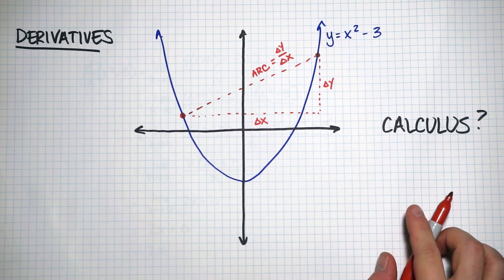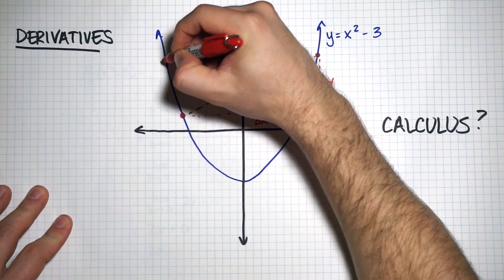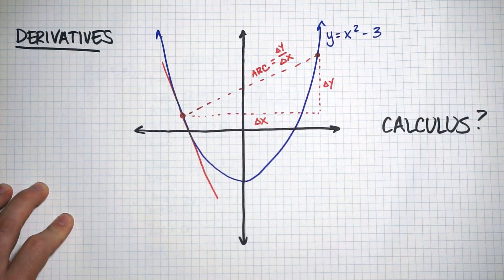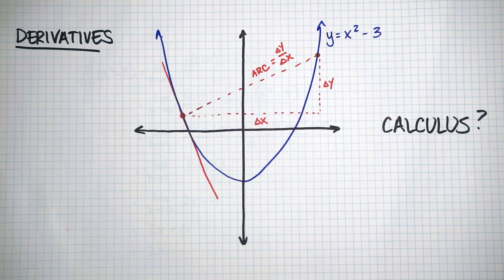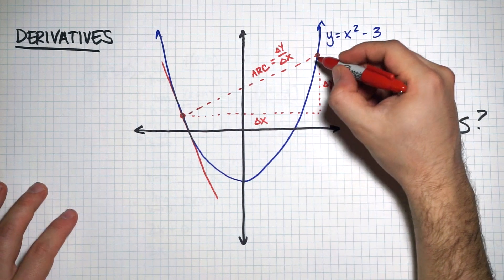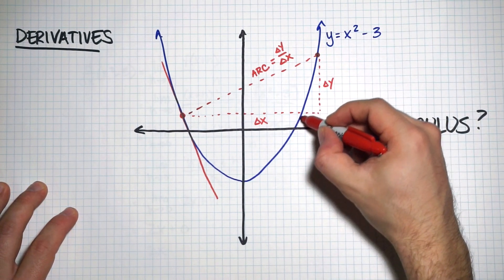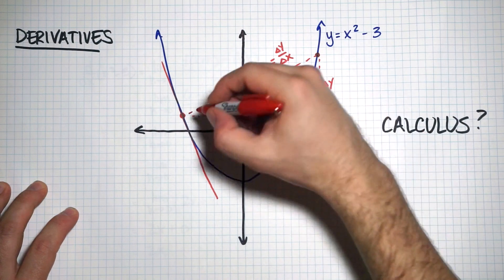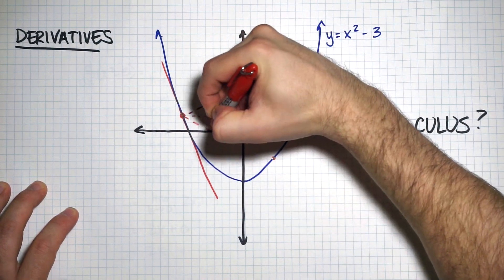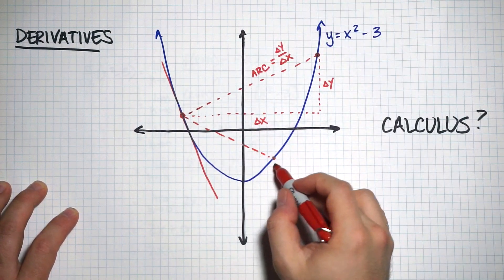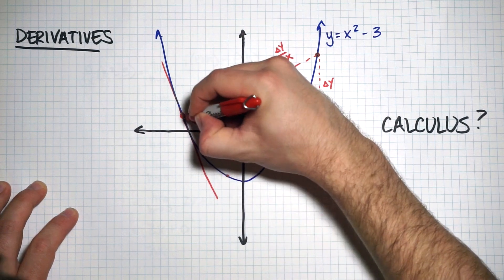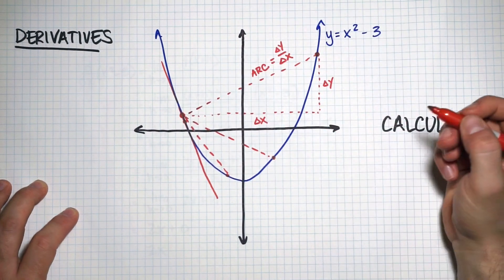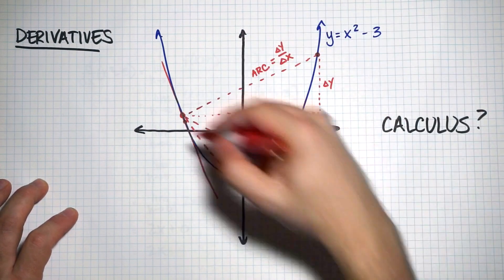But say we wanted to find the instantaneous rate of change at a point. The instantaneous rate of change can be visualized as the slope of the tangent at that point. The way we've done it is we take another point and move it closer and closer — finding the slope of the secant as it approaches the tangent. The closer we get, we essentially have the slope of the tangent based on those two very close points.